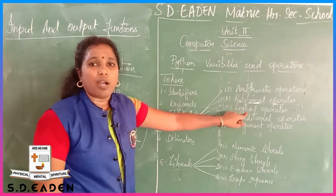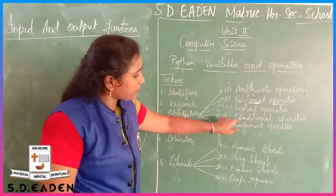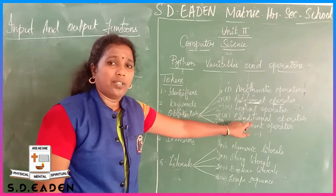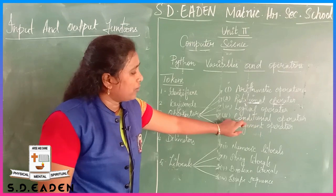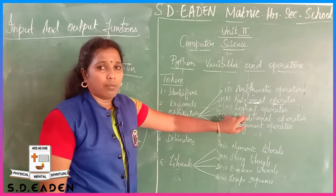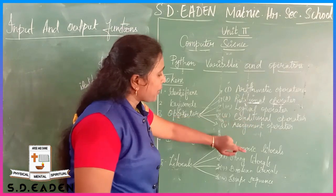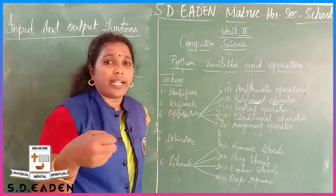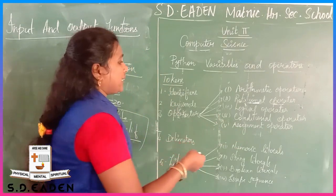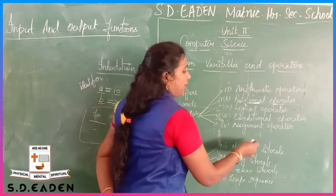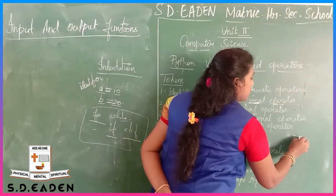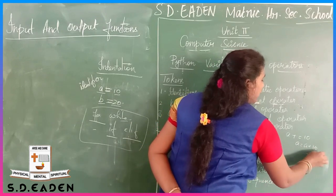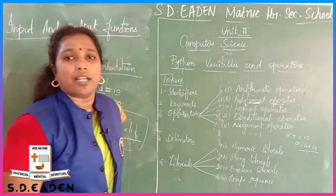To check more than one condition, use the logical operator: and, or, not. The conditional operator is the ternary operator. When you use the ternary operator, you can execute conditions inline. For the assignment operator, examples include plus equal to, minus equal to. For example, a plus equal to 10 is the same as a equals a plus 10. This is the assignment operator - we will do practical programs.